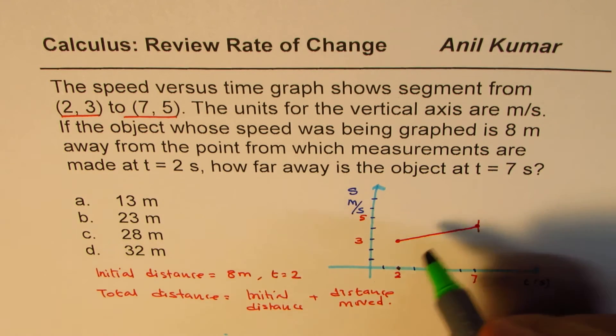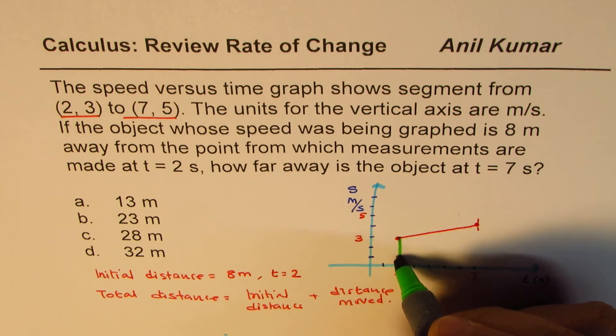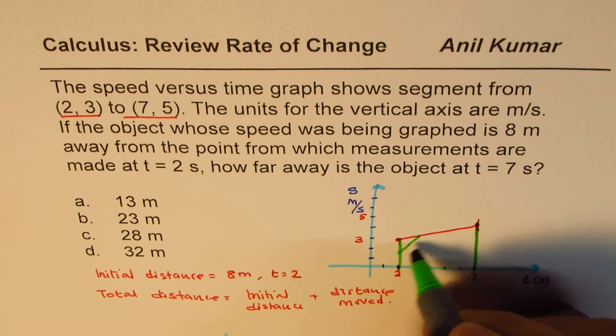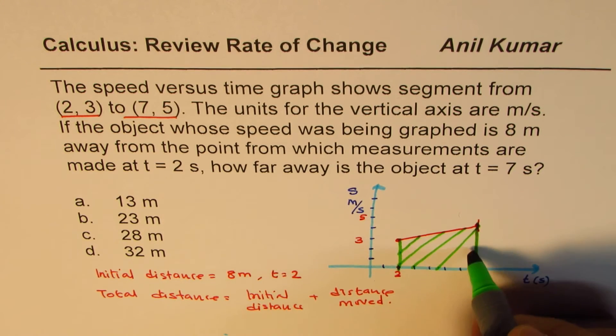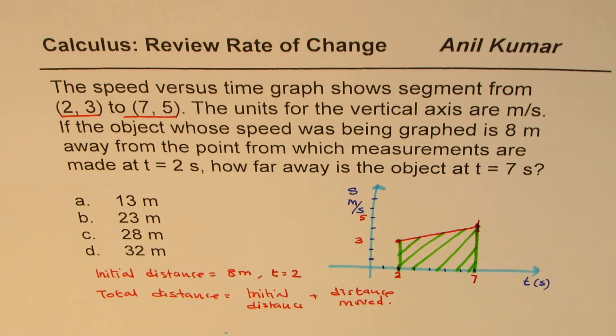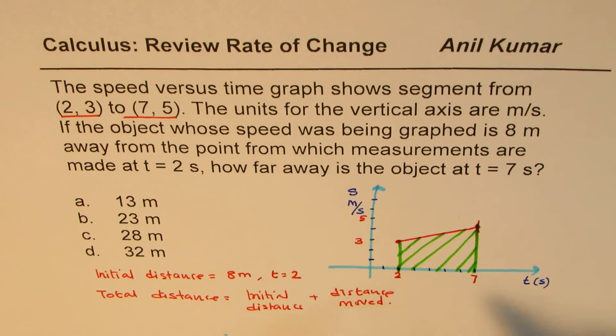We can find the area under this curve. This area really represents the distance. Let's find the area under the curve. You could also do it using the relation distance equals speed times time.